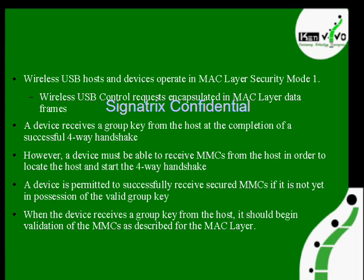Using that session key, the data will be encrypted. A device must be able to receive MMCs from the host in order to locate the host and start the four-way handshake. Before the four-way handshake, the device first has to get connected. During that time, since MMC and broadcast packets are broadcast, every device will receive them and send a connect notification. Once connected to the host, the authentication process happens through the four-way handshake. A device is permitted to receive secured MMCs even if it does not yet possess a valid group key.